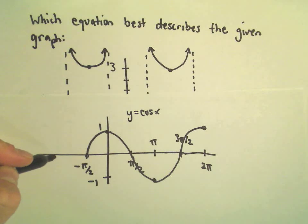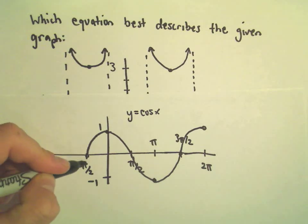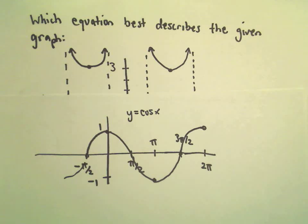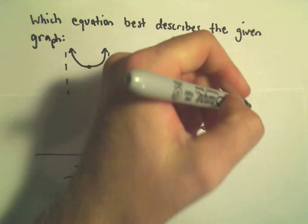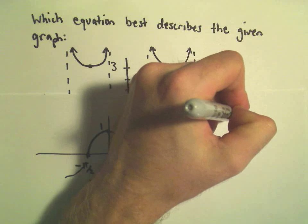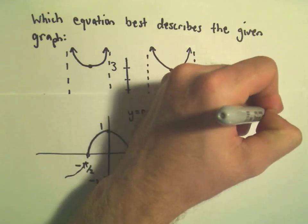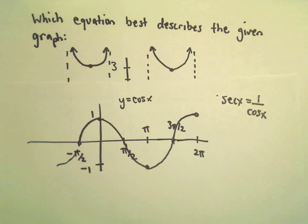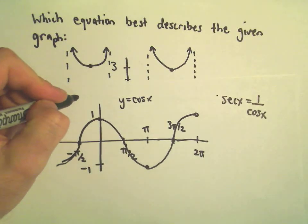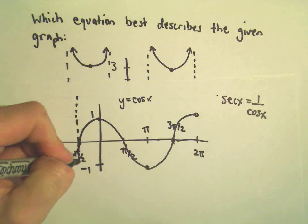So remember to get the graph of secant, secant is 1 over cosine. Secant is defined to be just 1 over cosine. And remember the graph of secant, wherever cosine is 0, that's where you get asymptotes.